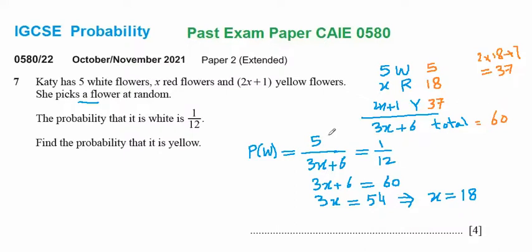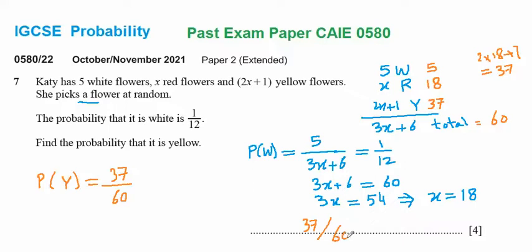The question asks to find the probability that the picked flower is yellow. The probability of yellow equals the number of yellow flowers over the total — thirty-seven over sixty. So 37/60 is the answer to this part of the question.